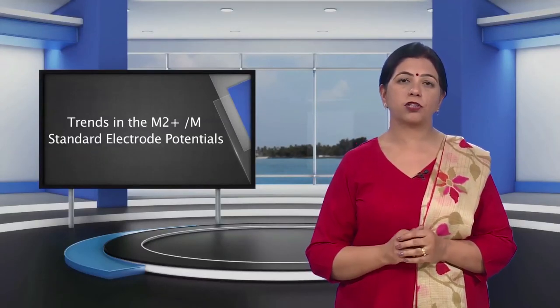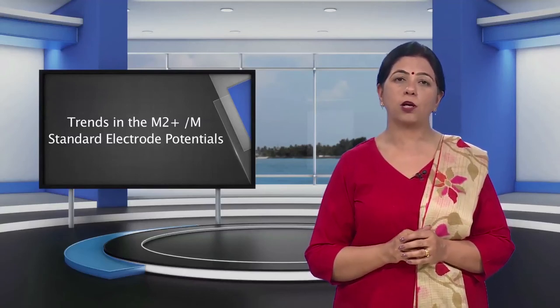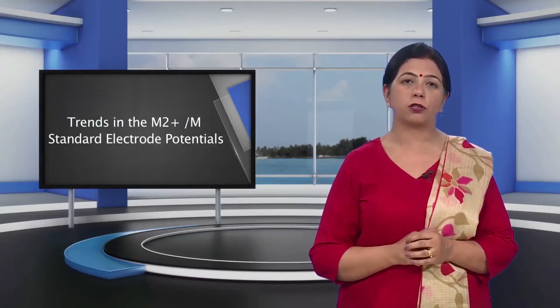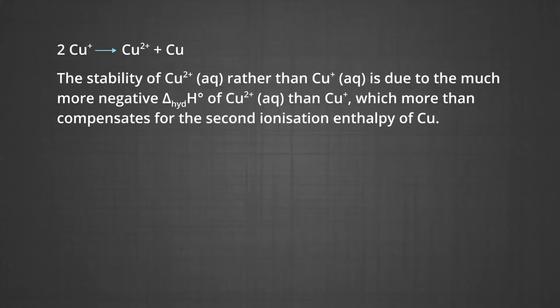Disproportionation is self-oxidation and self-reduction. Many copper compounds in the +1 oxidation state are unstable in aqueous solution and undergo disproportionation: Cu+ changes into Cu2+ and neutral copper (solid state). The stability of copper ions in the +2 state rather than +1 state is due to the much more negative hydration enthalpy of Cu2+ ions compared to Cu+ ions.